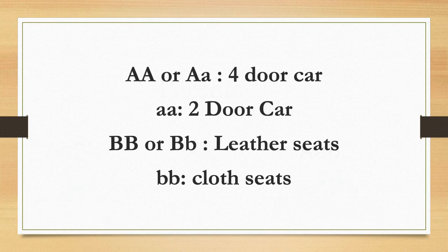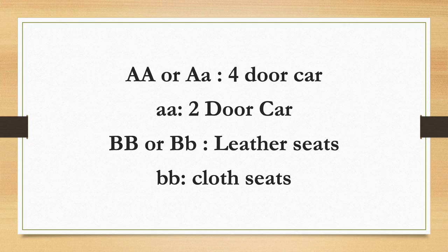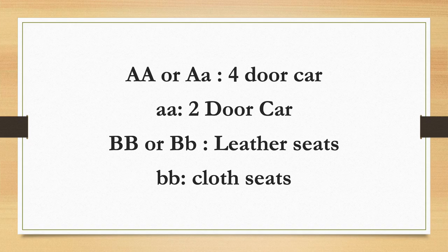A big A, big A gene or big A, little A gene will be represented by a four-door car. A little A, little A gene will be represented by a two-door car. A big B, big B or big B, little B gene will be represented by leather seats.